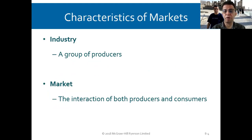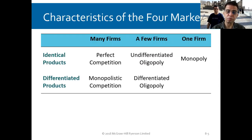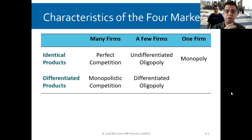When we talk about industry, we mean a group of producers — oil producers, wheat producers — they are the industry. A market is the interaction of both producers and consumers. We look at whether products are identical or differentiated, and whether one firm, many firms, or a few firms are providing them.